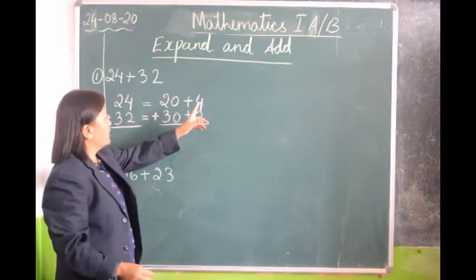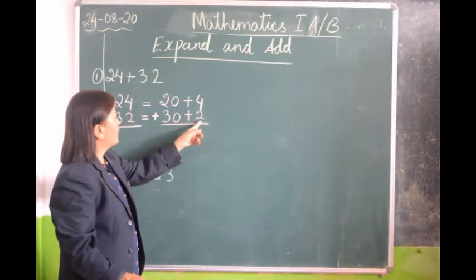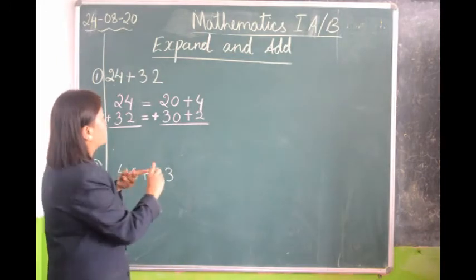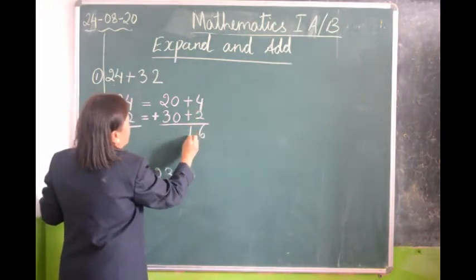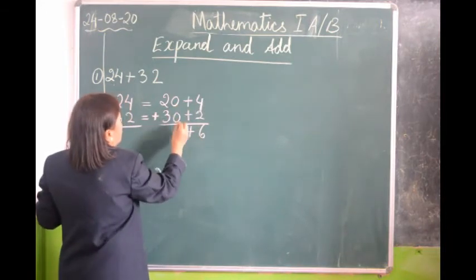We will add this number. We will keep the bigger number on the head and smaller number in our finger. 4, 5, 6. So we write 6 here. We write plus. 0 plus 0 is 0.